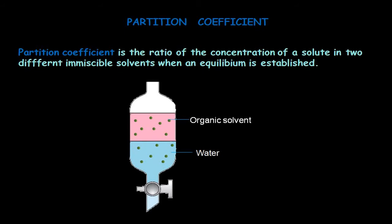According to the solubility of the solute between the solvents, some molecules will dissolve in the organic solvent and the remaining will stay in water. The movement of molecules between the solvents continues until equilibrium is reached. At equilibrium, the number of molecules moving from the organic solvent to the aqueous solvent equals those moving the other way. At that point, the concentration of solute X in each solvent gives us the equilibrium expression shown here.